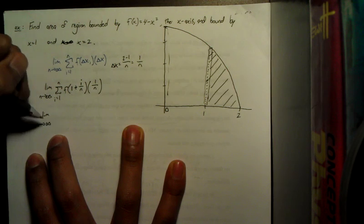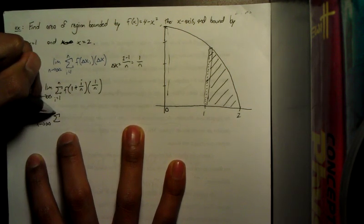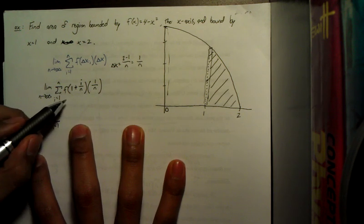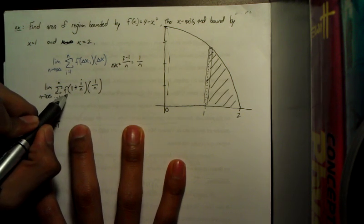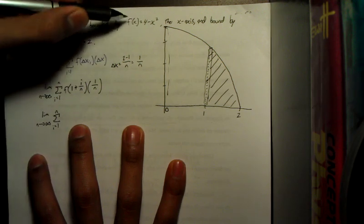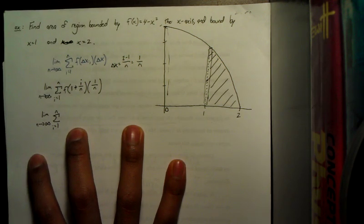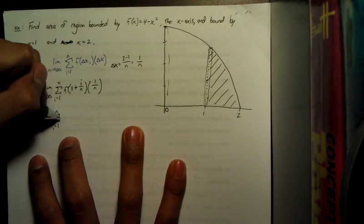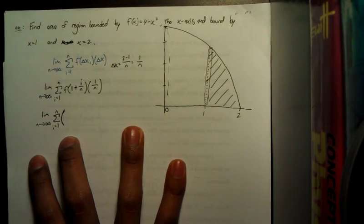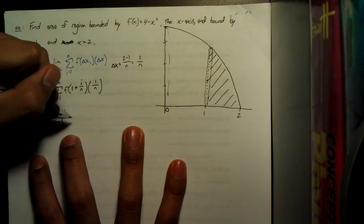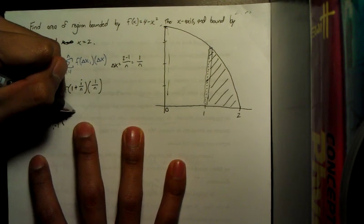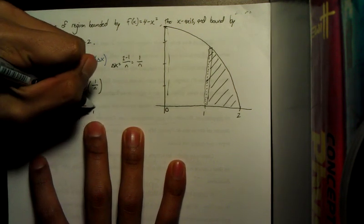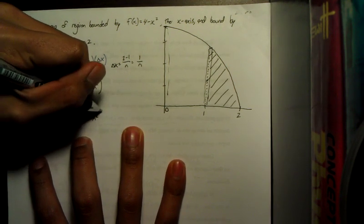So the limit as n approaches infinity, i equals 1. I'm going to plug this back into our original f(x) and then after some distributive property and simplifying, I'm going to skip those steps, but what you end up getting is 3 minus 2i over n minus i squared over n squared.